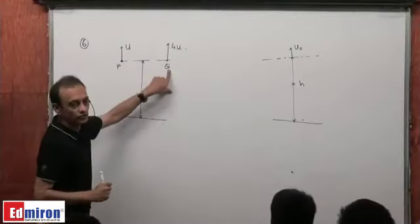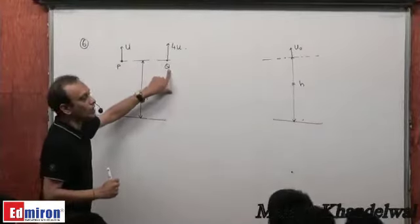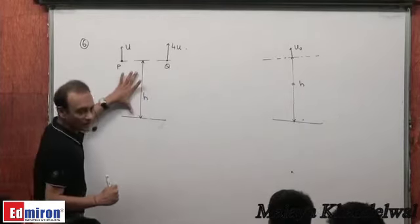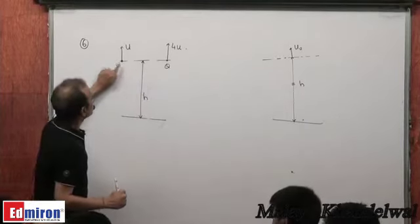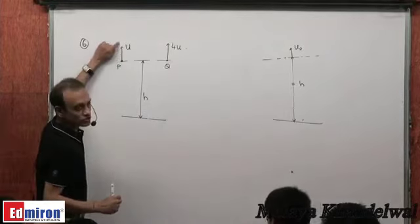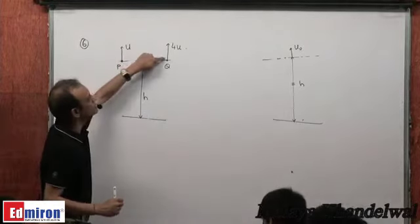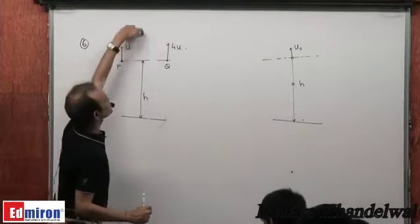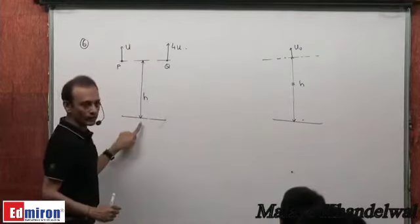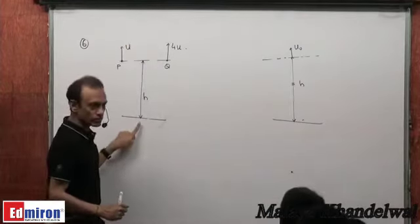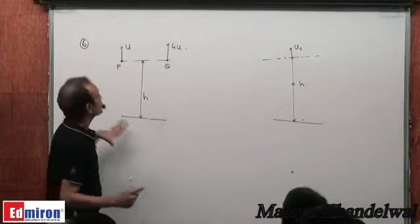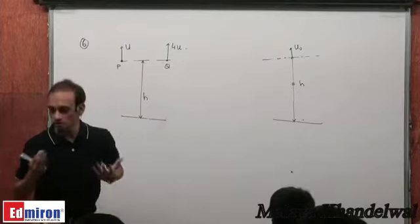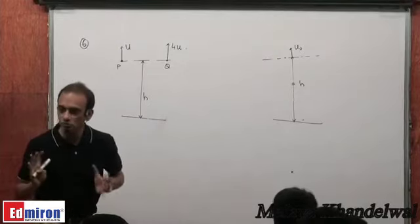Two particles P and Q are dropped from a balloon at height h. The first balloon is moving with velocity u and the second with velocity 4u. Each particle reaches a maximum height and then falls to the ground. We want to find which of the two takes less time to reach the ground.